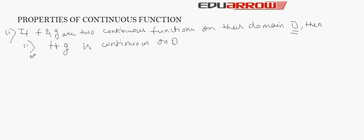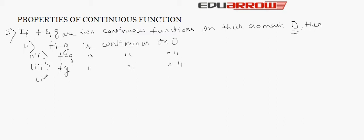Similarly, their subtraction is also continuous on d. Similarly, if we multiply the two functions, the product of these two functions will also give us a continuous function on the domain d. Similarly, if we multiply any constant by a function f, then the function will remain continuous on its domain d.